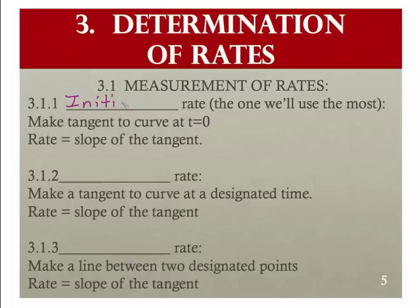The first is called an initial rate. And what is done, I'm going to show you this graphically in a minute, we're going to make a tangent to the curve at time equals zero. That's why we call it the initial rate. So if we have a tangent of the curve, what we'll do is we'll take the slope of that line, and the slope of that line is the rise over the run, aka the rate. That's called an initial rate, and that will be the most common that you're going to come across.